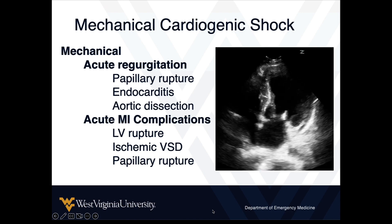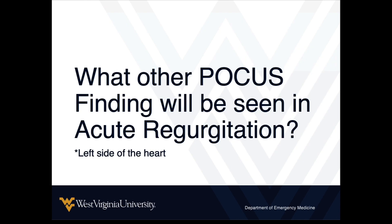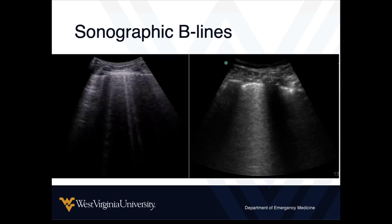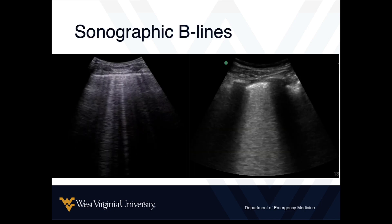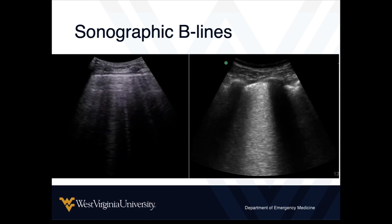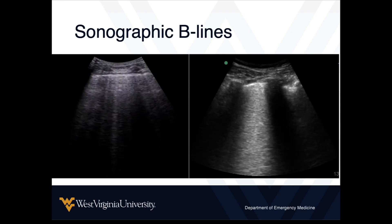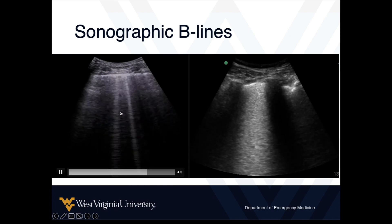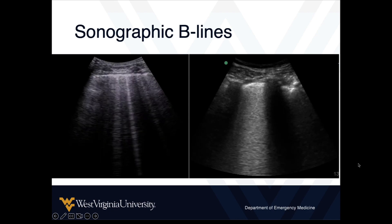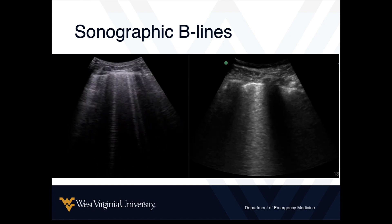This is not a specific endocarditis talk, but certainly worth noting — especially in the context of the IV drug use and opioid epidemic in our country. What other things will you see with acute left-sided regurgitation, whether aortic or mitral? You're probably going to see sonographic B-lines. This is another illustration of why we look at the heart, lungs, and abdomen systematically. If we see signs of cardiogenic shock — from pump failure or mechanical causes — when we look at the lungs, we should see signs of pulmonary edema, which include sonographic B-lines. If these are new to you, please go back and review the heart and lung point-of-care ultrasound CME courses.